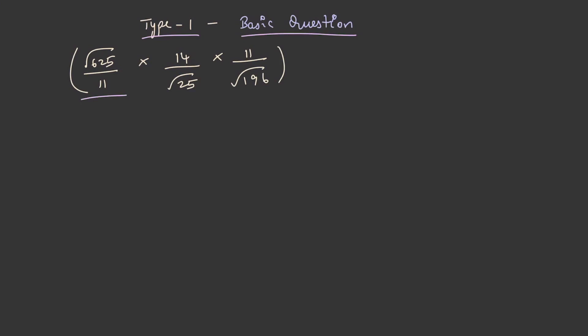We shall solve some basic questions in this lecture. Square root of 625 by 11, into 14 by square root of 25, into 11 by square root of 196. Let's solve this — square root of 625 is 25, square root of 25 is 5, and square root of 196 is 14.